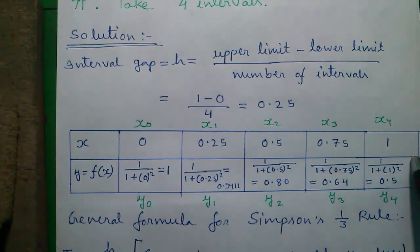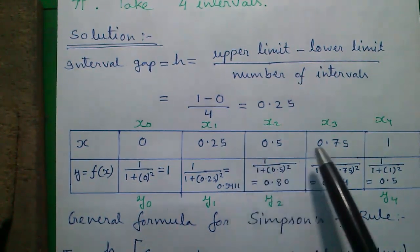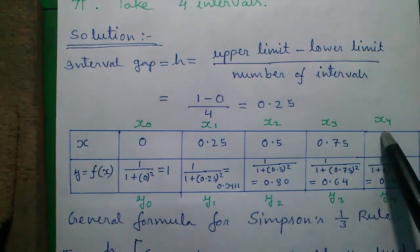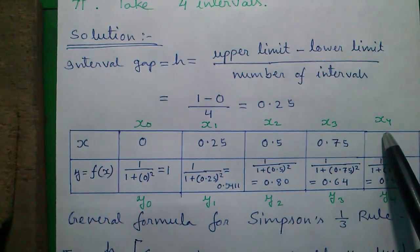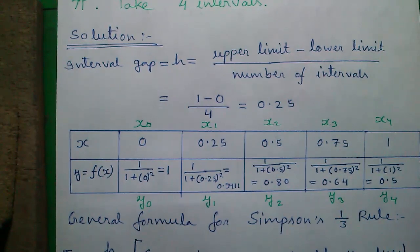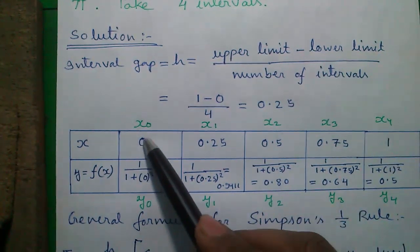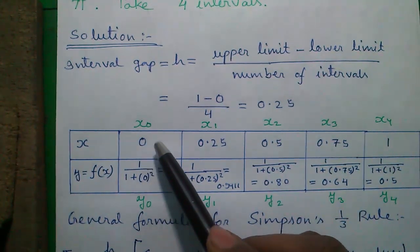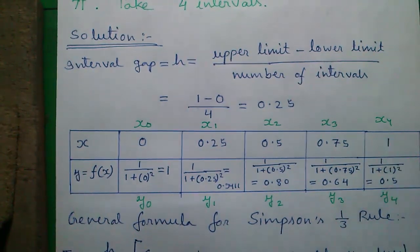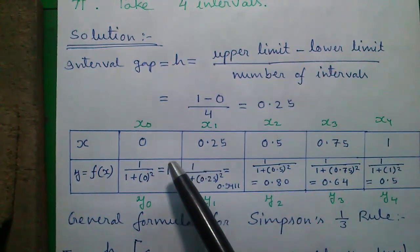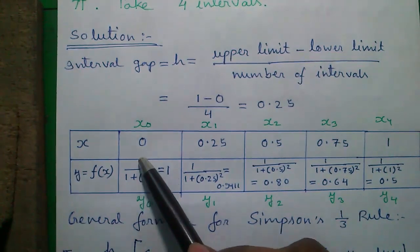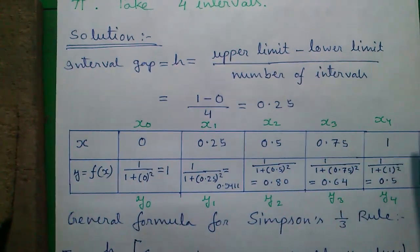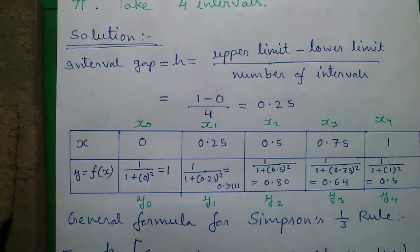Similarly, we will continue to construct the table. We will stop when we will reach our upper limit which is 1. In some questions, the number of intervals may not be given. In that case, we will start with the lower limit of x and continue up to our upper limit. And remember number of iterations, here number of iterations are 5, will always be 1 plus number of intervals.